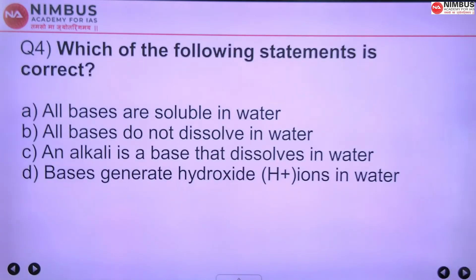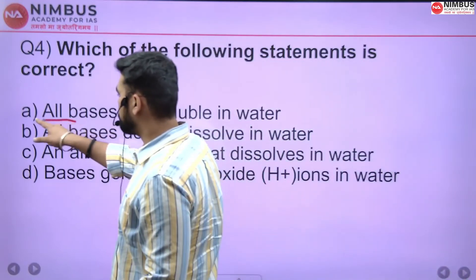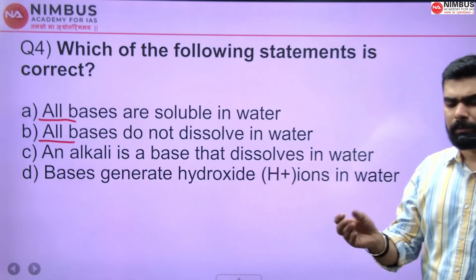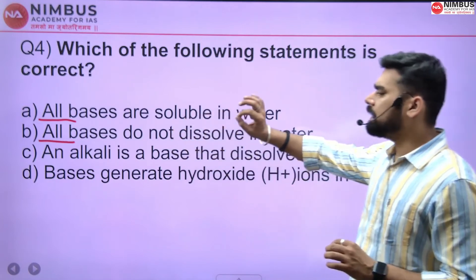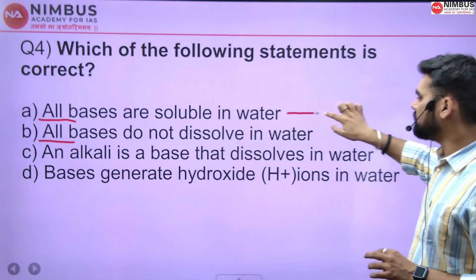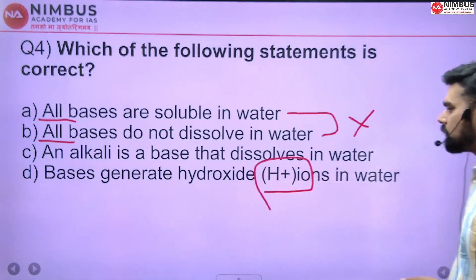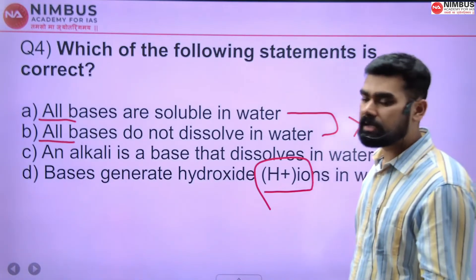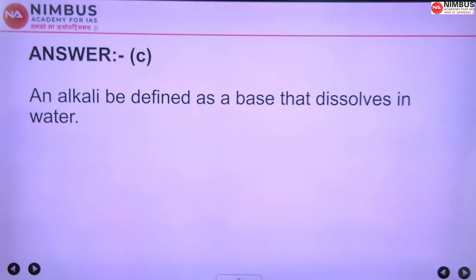Which of the following statements is correct? The first two statements use 'all' or 'none' — these are called extreme statements. In science, and in every subject, there are exceptions, so in 95% of cases extreme statements will be wrong. The fourth option about hydroxide ions is also wrong. The right option is C: an alkali is a base that dissolves in water. All alkalis are bases, but not all bases are alkalis.